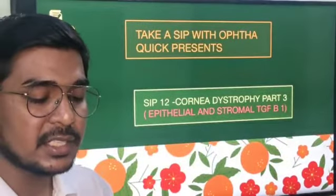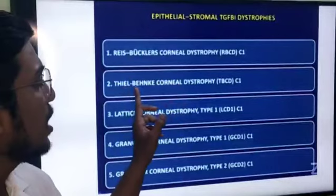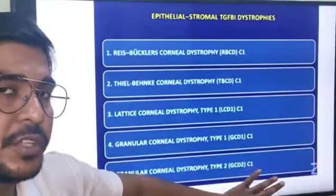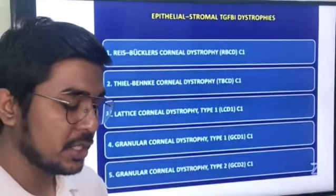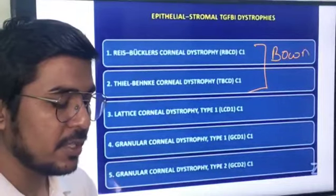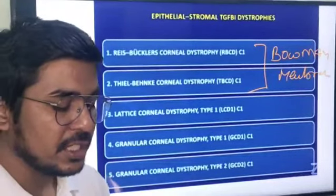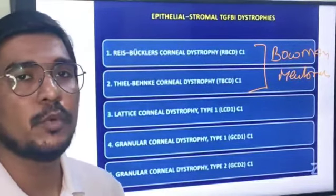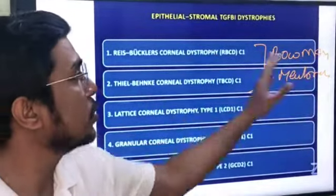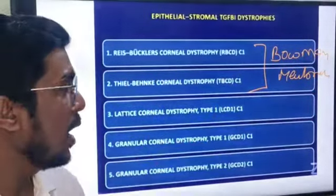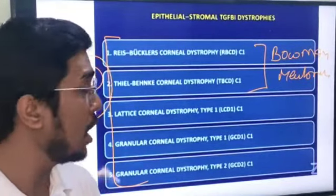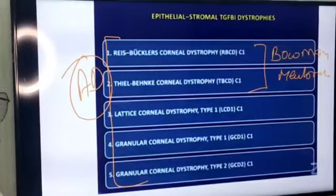Now, the name is very important — remember: Reis-Bücklers, Thiel-Behnke, lattice, granular type 1 and type 2. These are the TGF beta-1 related dystrophies. Reis-Bücklers and Thiel-Behnke are associated with the Bowman's membrane — these are the Bowman's membrane corneal dystrophies. The rest are stromal. All of these are autosomal dominant.